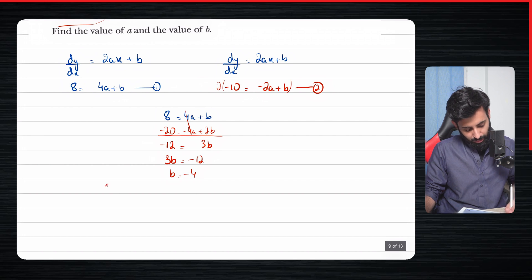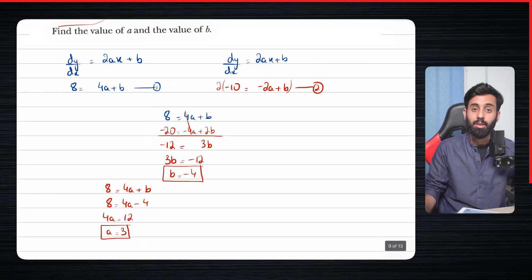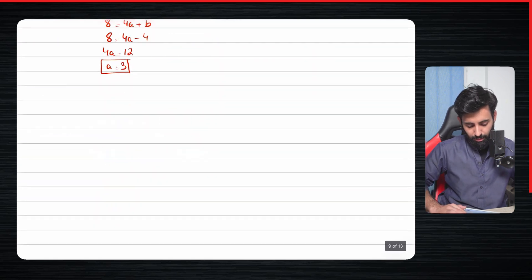Now let's use any one of the two equations. So I'm going to use the first equation, which was 8 equals 4a plus b, which means 8 equals 4a minus 4, which means 4a equals 12, which means a equals 3. And there you go, we now have not only the value of a but the value of b also: 3 and minus 4. Yep, that's the correct answer.